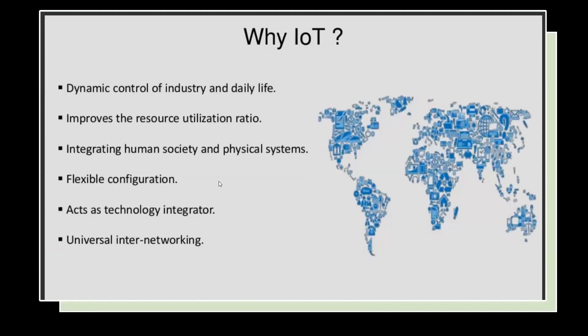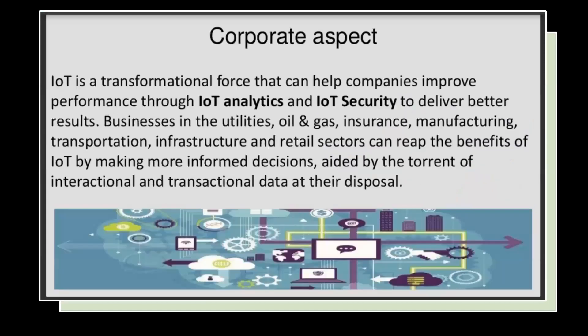Why IoT? It is used for dynamic control of industry and daily life. It includes the resource utilization ratio, integrating cyber-physical systems, flexible configuration, access technology integration, and universal internet networking.